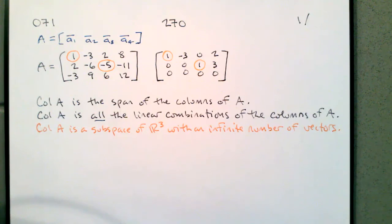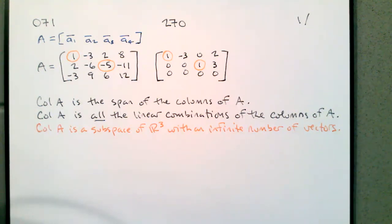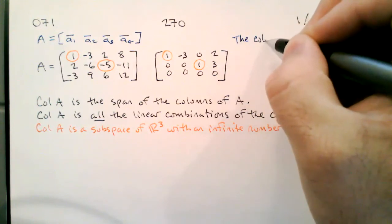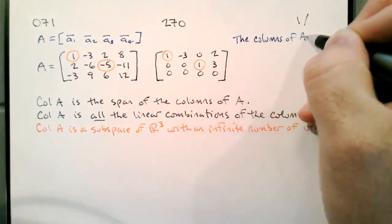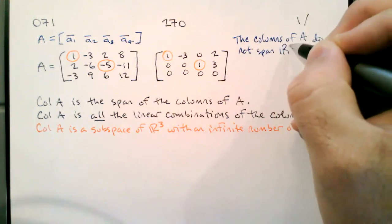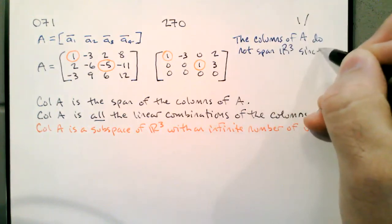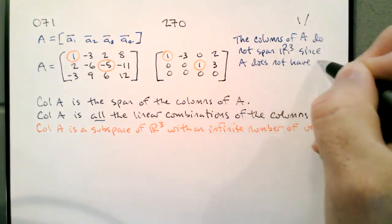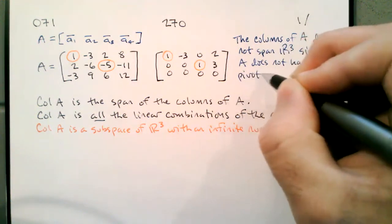What makes it more complicated is that we've added another layer. There's a vector space attached to A as well, called the column space of A. The columns of A do not span R3 since A does not have a pivot in every row.